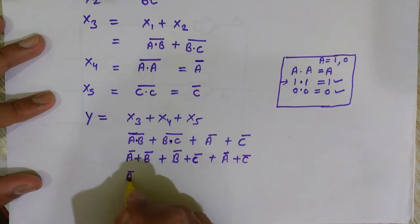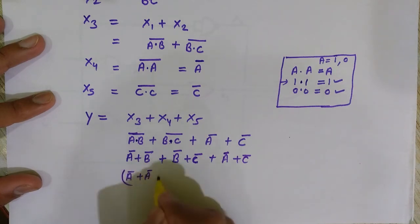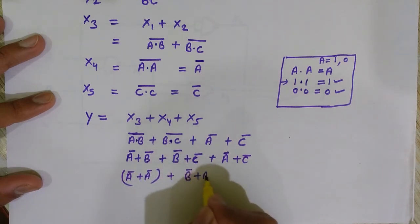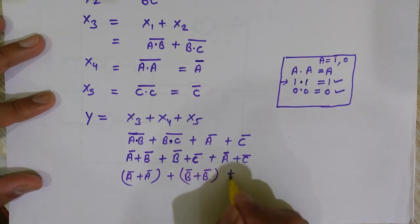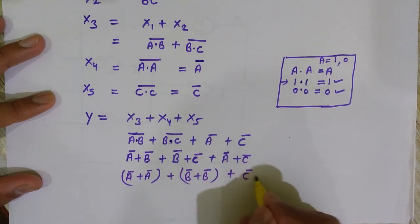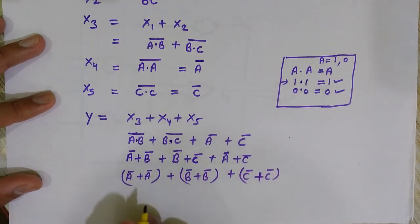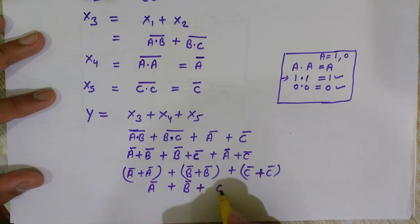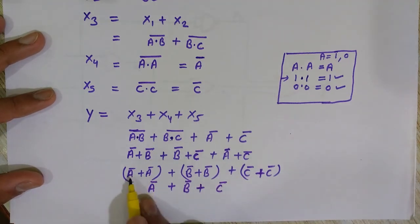Now write similar terms together: we have Ā + Ā from two places, B̄ + B̄ from two places, and C̄ + C̄ from two places. This expression then becomes: (Ā+Ā) + (B̄+B̄) + (C̄+C̄), which simplifies to Ā + B̄ + C̄, since X+X = X for any Boolean variable.